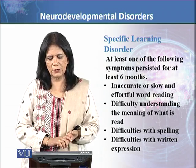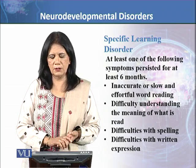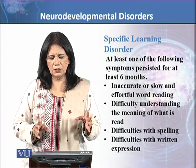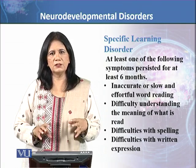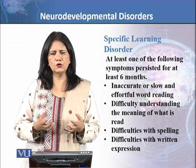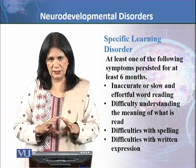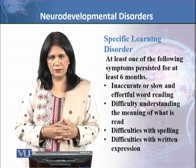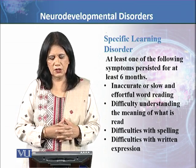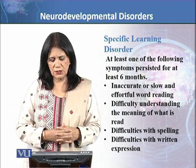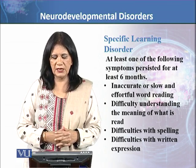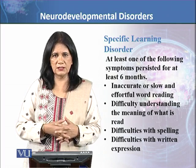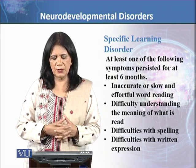Number one is inaccurate or slow, effortful word reading — this is a reading disability. If reading is inaccurate, slow, or effortful, we need to be watchful and assess how much help is needed. The second symptom is difficulty understanding the meaning of what is read — reading comprehension is also an important area to evaluate.